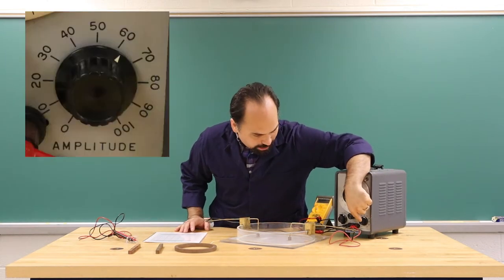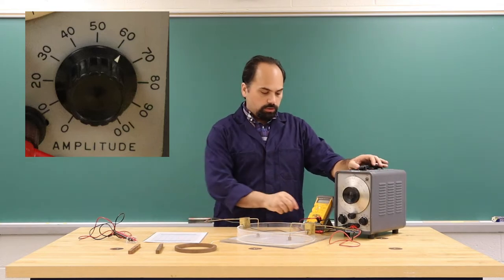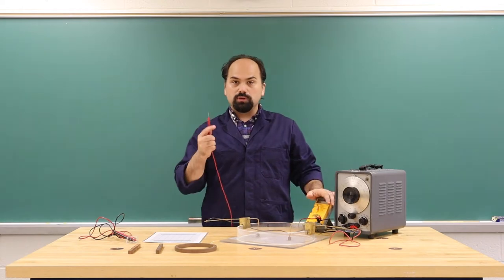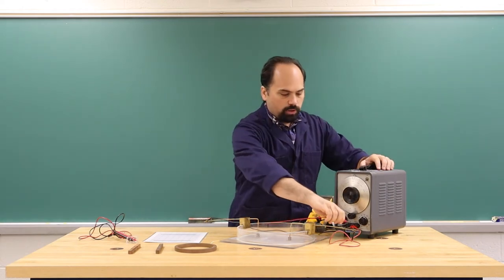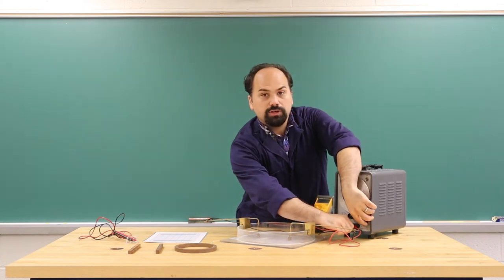When you are setting the voltage on the acoustic oscillator, the amplitude knob is marked in percent of total amplitude, so you will need to use the multimeter and the single probe to directly measure that voltage and turn it until you get to 10 volts.